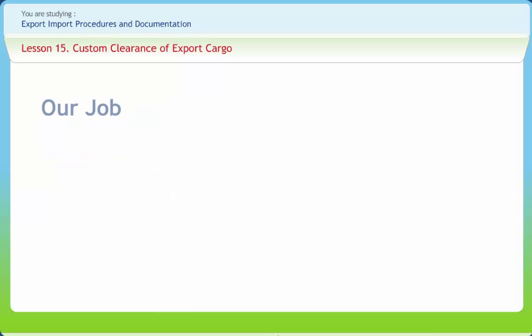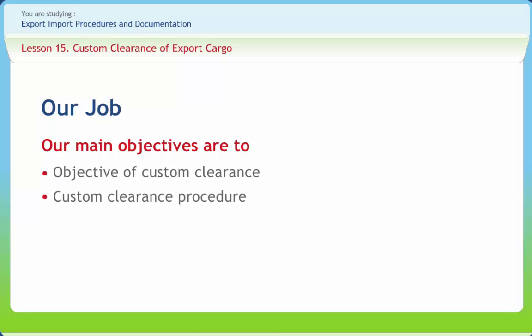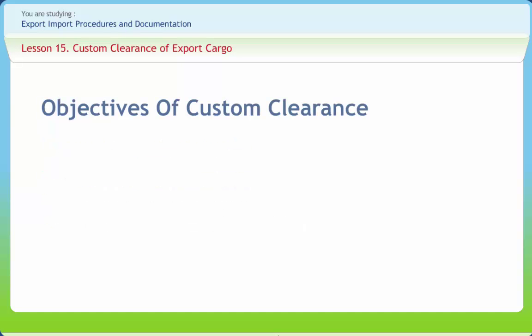After studying this lesson, you should be able to understand the objective of custom clearance, the custom clearance procedure, and the clearance procedure for shipment by air. Apart from being a source of revenue, the major objectives of custom clearance are as follows.